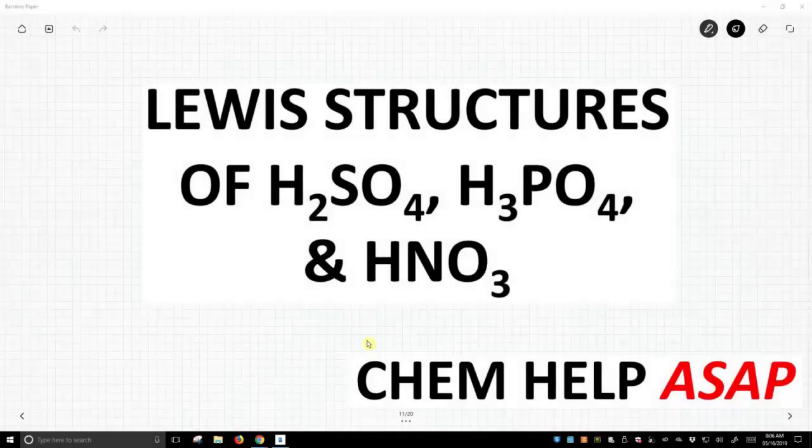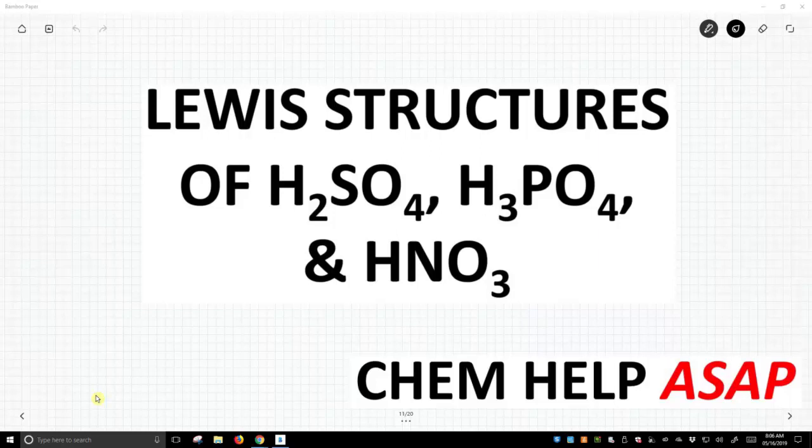Hello from Chem Help ASAP. In this video, we're going to look at some special Lewis dot structures, and these are Lewis structures of the common acids: sulfuric acid, phosphoric acid, and nitric acid.